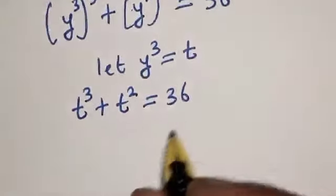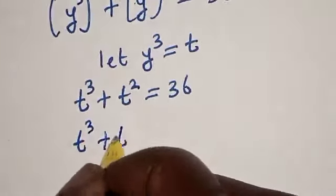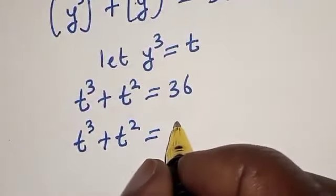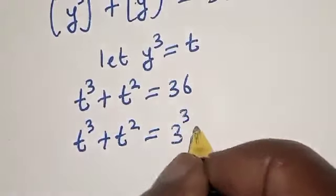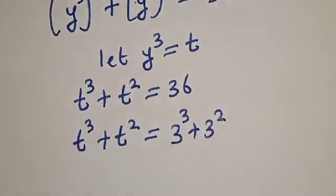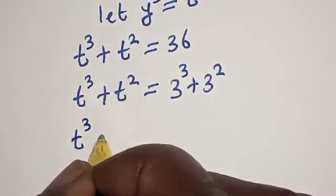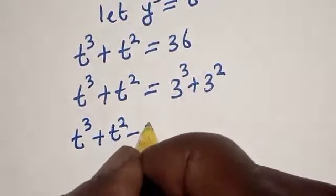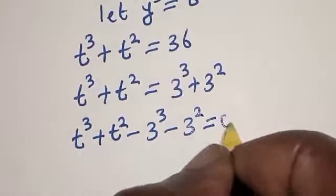So t raised to power 3 plus t squared is equal to 36, which is the same as t raised to power 3 plus t squared equaling 27 plus 9. So we have t raised to power 3 plus t squared minus t raised to power 3 minus t squared is equal to 0.